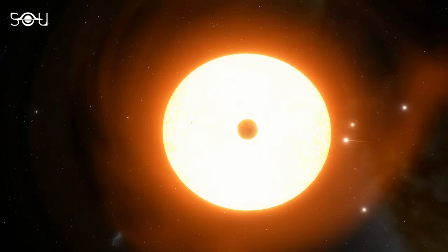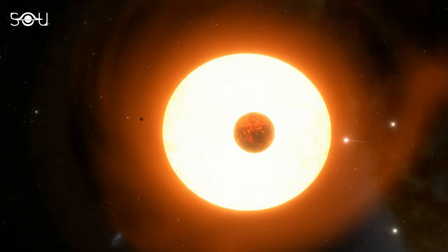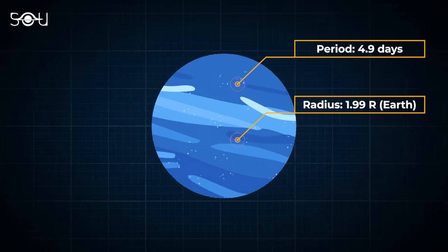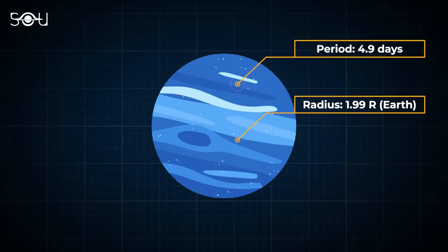The radius of TOI 733b was inferred by looking at the amount of starlight blocked by the transiting exoplanet. It was measured around 1.99 Earth radii, which places it in the small planet radius valley.